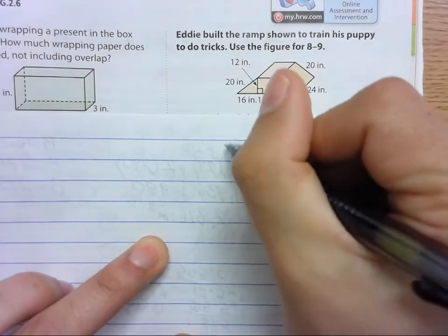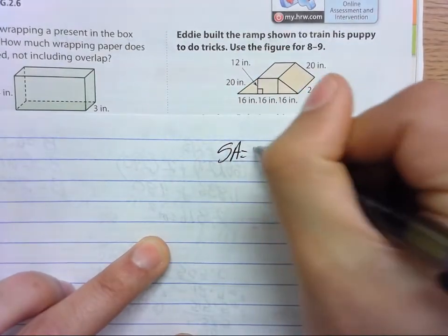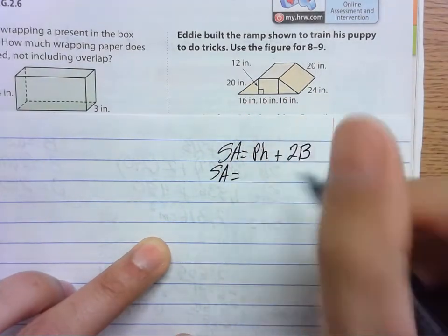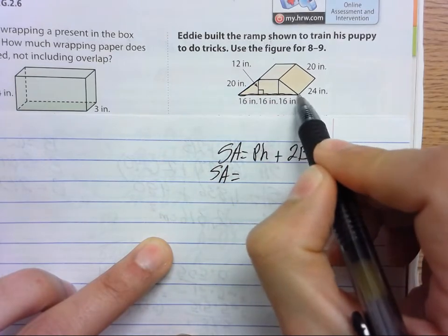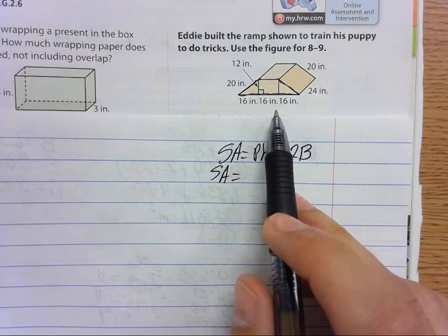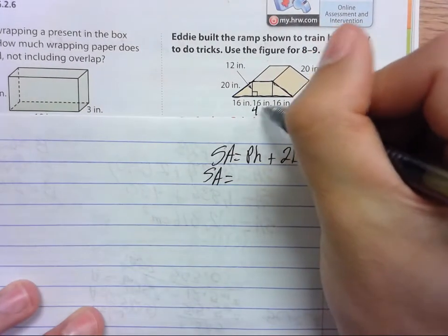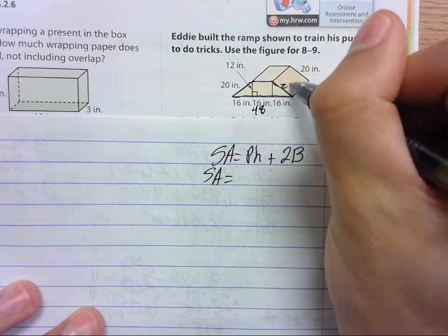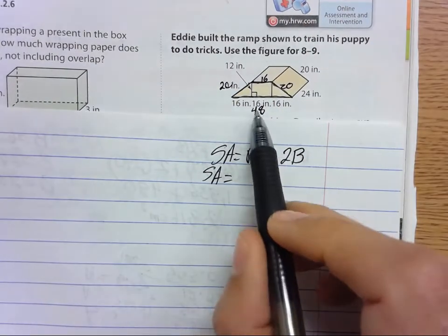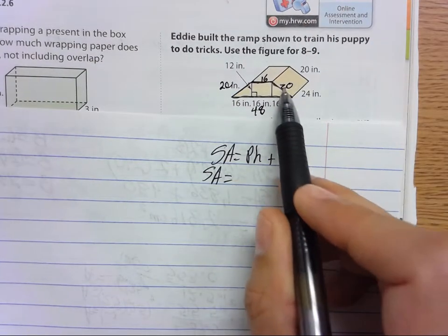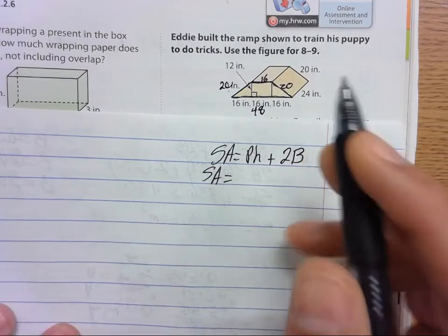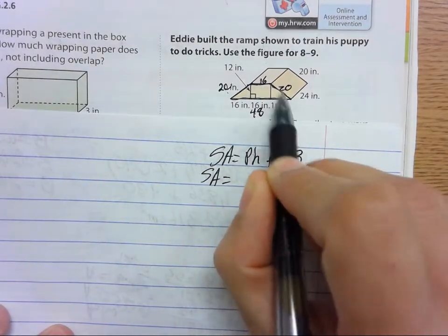So we start with the formula. Now we need to substitute. Here's our base, because it's a trapezoidal prism, so we need to walk all the way around. Across the bottom is 16 plus 16 plus 16, so this is actually 48. Up this side is 20, down the other side is 20, and across the top is 16. So 48 plus 20 plus 20 plus 16. When you add these up, you get 104.